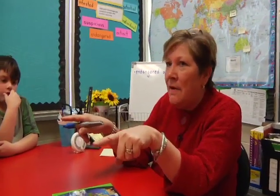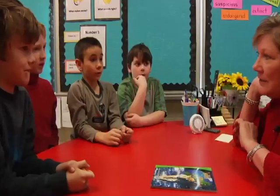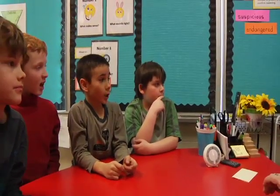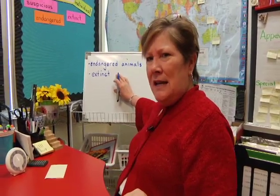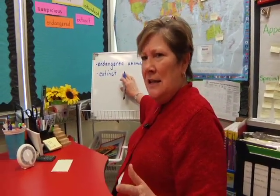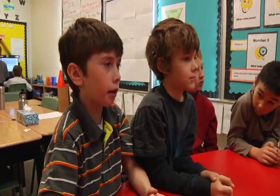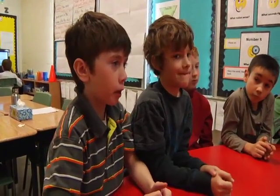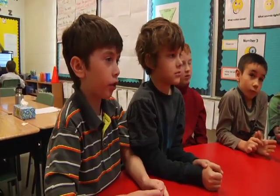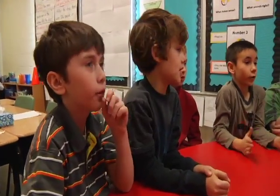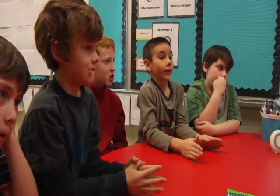What words do you think we'll find in our text, based on the schema that you already have about endangered animals? A student responds: they're about to be extinct. The teacher asks what's the difference between endangered and extinct. A student explains: if an animal is endangered, it's still alive but there's a low number of the species. But if it's extinct, there's no more of it — ever, in anybody's life.